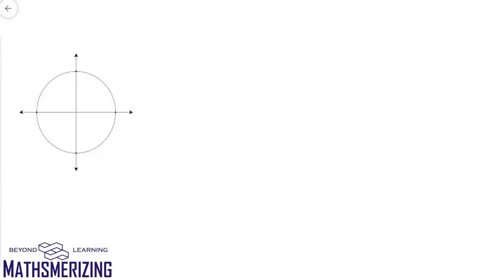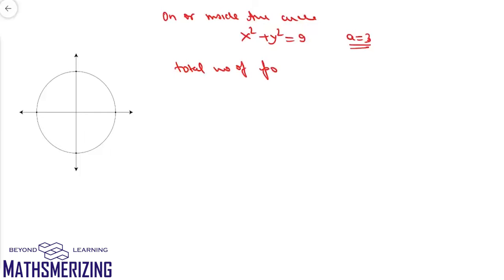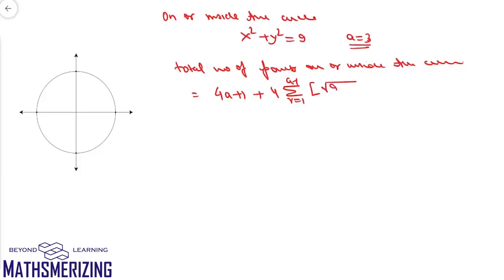Let's take an example. Suppose we have to find the number of integral points lying on or inside the circle x² + y² = 9. Here a = 3. The total is 4a + 1 + 4·Σ (r from 1 to a-1) ⌊√(9 - r²)⌋. Substituting a = 3 gives 4·3 + 1 + 4·Σ (r from 1 to 2) ⌊√(9 - r²)⌋, which is 13 + 4·(⌊√8⌋ + ⌊√5⌋).